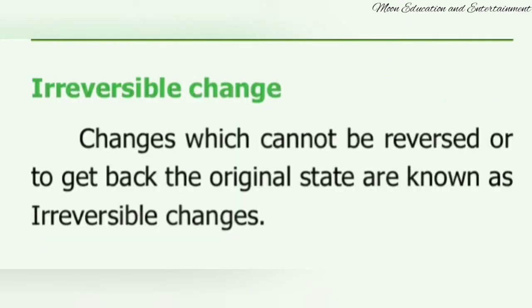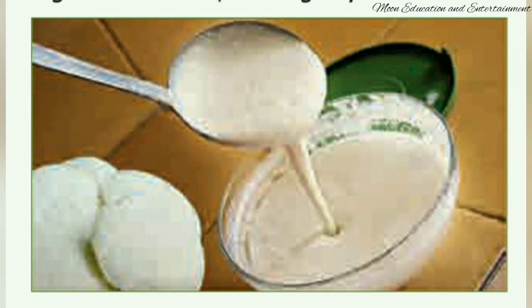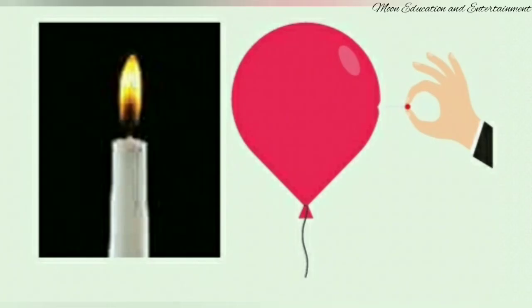Irreversible change: changes which cannot be reversed back to their original state are called irreversible changes — we cannot get back the same state. For example, idli batter: after baking an idli, it is not possible to bring it back to the batter stage. Other examples are burning of a candle and bursting of a balloon — both cannot be brought back to their original state after being burnt or bursted.